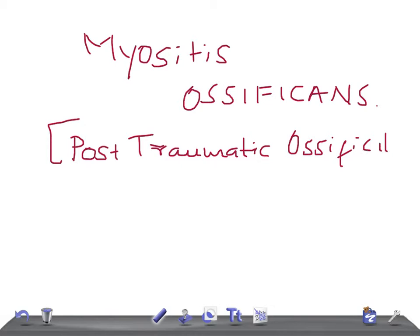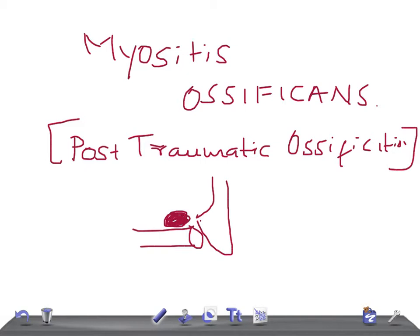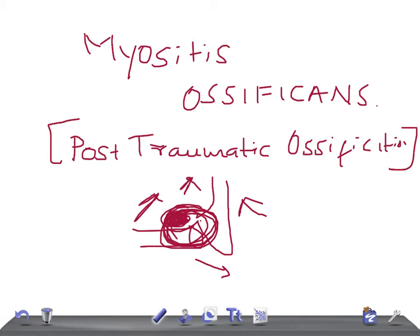So what is myositis ossificans? It is nothing but ossification of the hematoma around a joint, resulting in the formation of a mass around the joint and around the bone. This mass restricts the movement of the joints. For example, if we take the elbow joint, a hematoma forms over here, gets stuck, forms a mass, and hence the movement of the joint gets restricted.